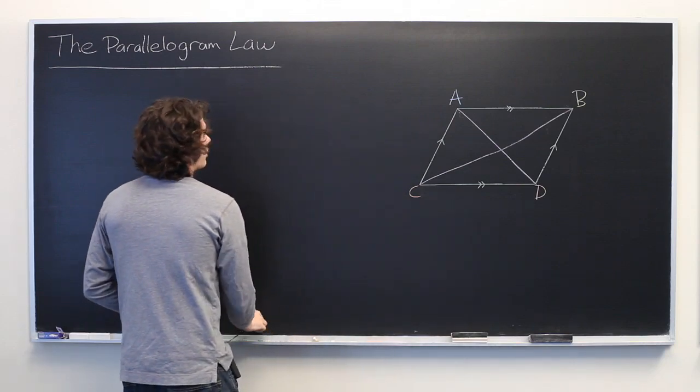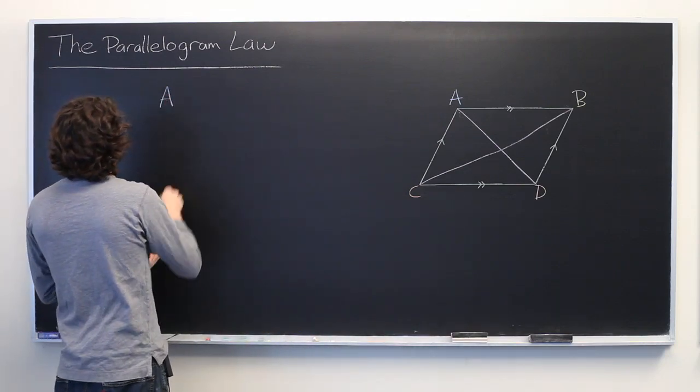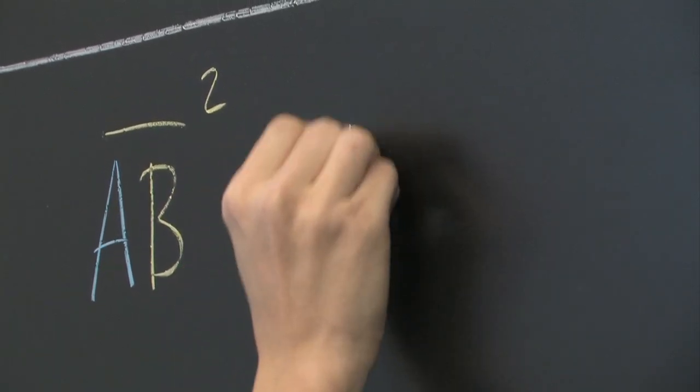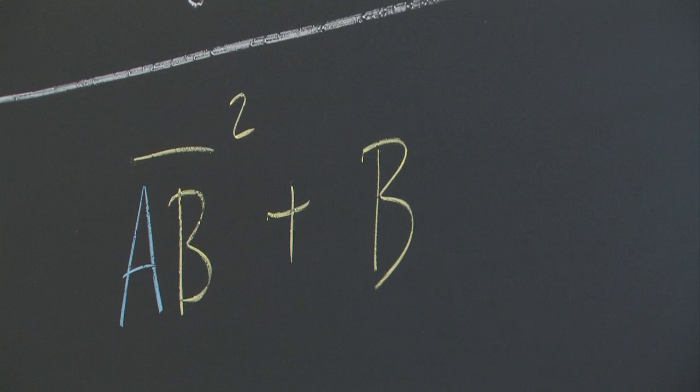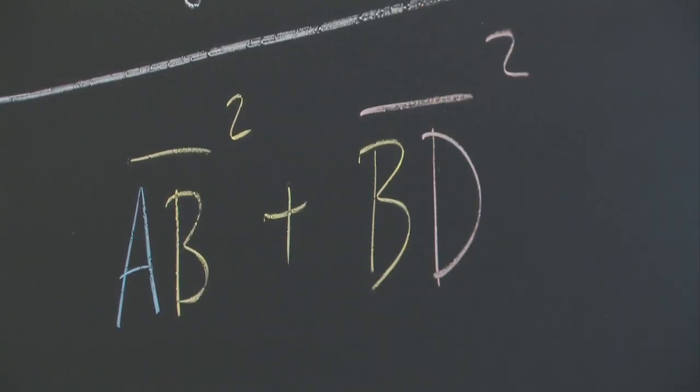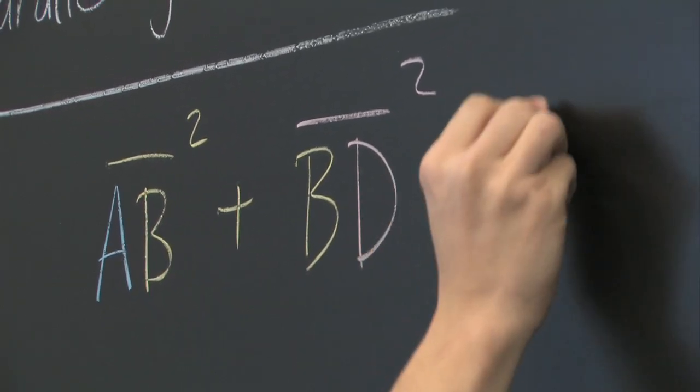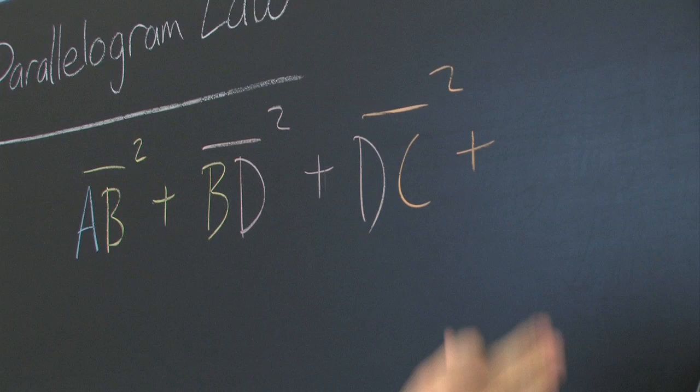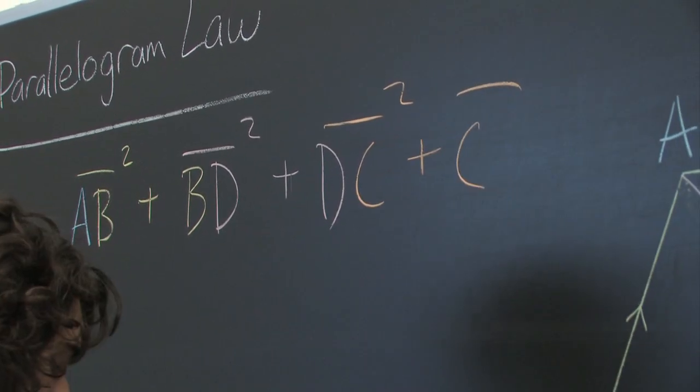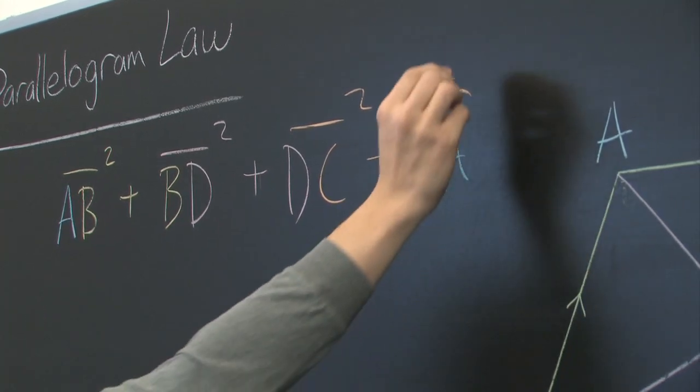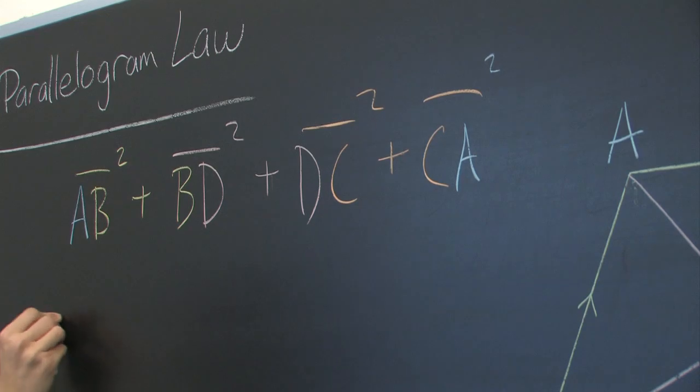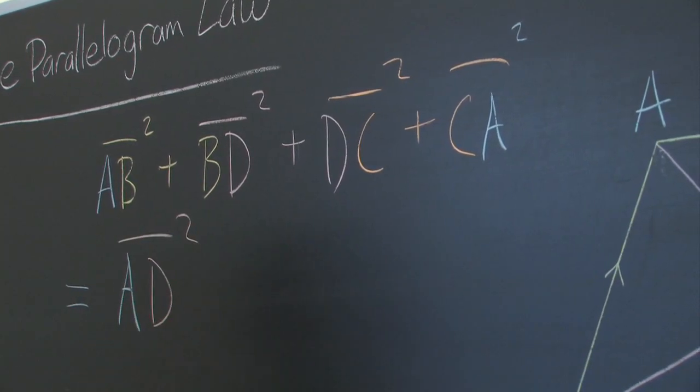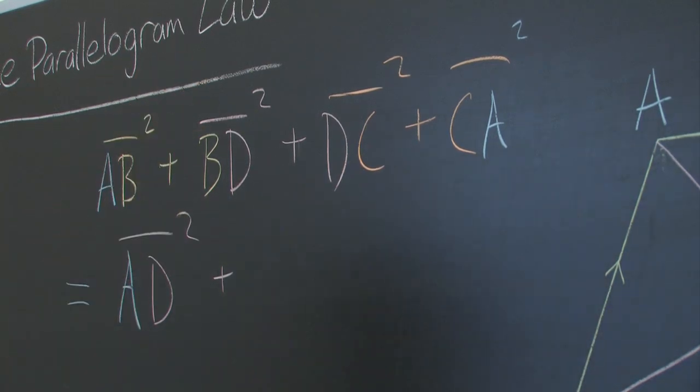So, what I'm claiming is that AB squared plus BD squared plus DC squared plus CA squared all equals AD squared plus CB squared.